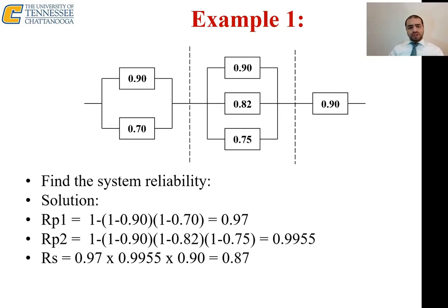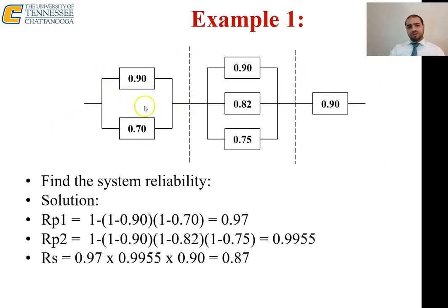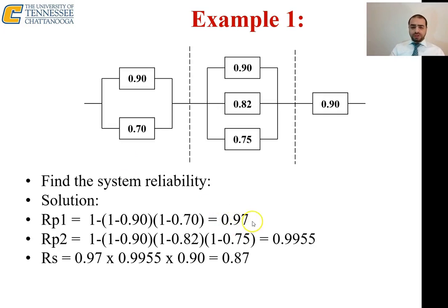Let's take an example: find the system reliability for a system with six components. First, identify the sections. Two components are in parallel with reliabilities 0.9 and 0.7. Applying the parallel formula: 1 − (1 − 0.9)(1 − 0.7) = 0.97. As expected, the parallel result 0.97 is higher than the highest individual value of 0.9.